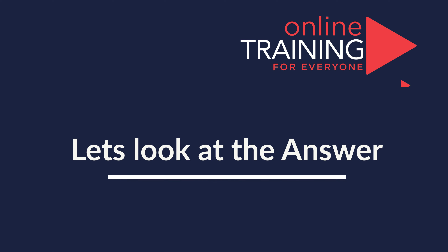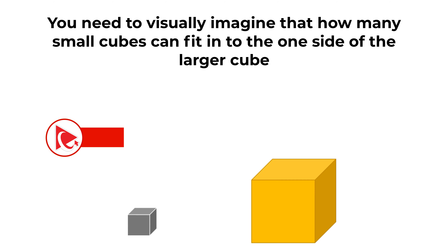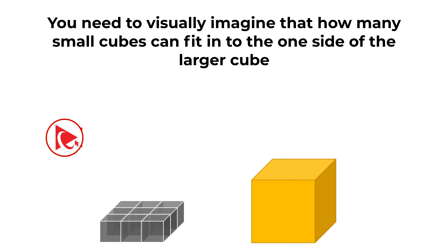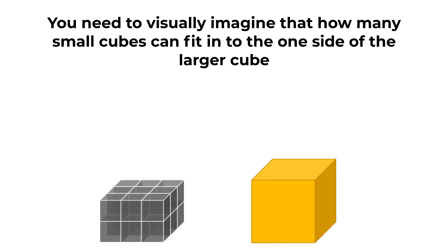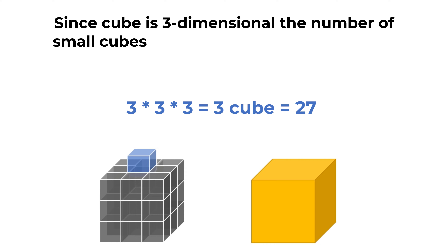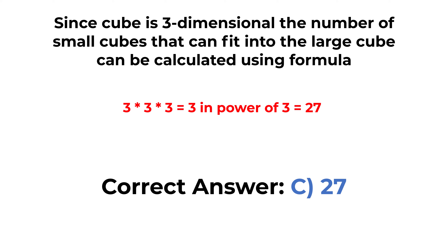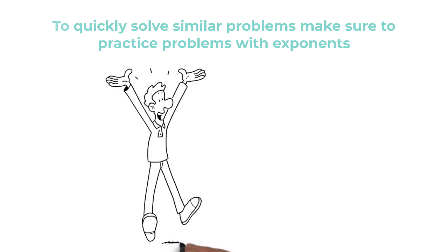To solve this, visually imagine how many small cubes fit on one side of the larger cube — the answer is three small cubes per side. Since a cube is three-dimensional, the number of small cubes that can fit is calculated by 3 × 3 × 3, which equals 3 cubed, which equals 27. That's where the word 'cube' might be coming from. So the correct choice is C, 27.